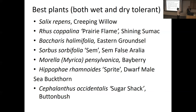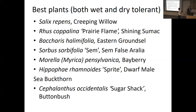Baccharis halimifolia — eastern groundseltree — is native on the coast. We sometimes try to mimic landscapes that have this kind of salty, drought, and wet condition, as a lot of coastal areas have this. Baccharis is native from northern Florida up through Massachusetts along the coast. Sorbus sorbifolia, false spirea; Morella; and Hippophae rhamnoides — sea buckthorn — is European and quite salt tolerant. If you get sea buckthorn, make sure you get a cultivar like a male dwarf with no fruit; if you don't, you'll be really disappointed.